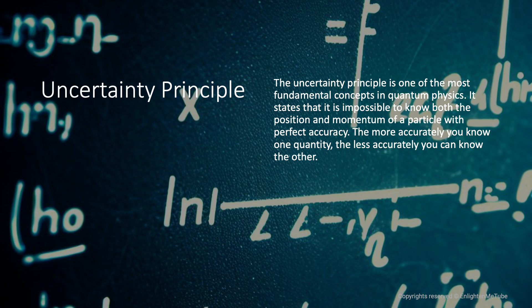The uncertainty principle, proposed by Heisenberg, states that we cannot simultaneously know a particle's position and momentum with absolute certainty.